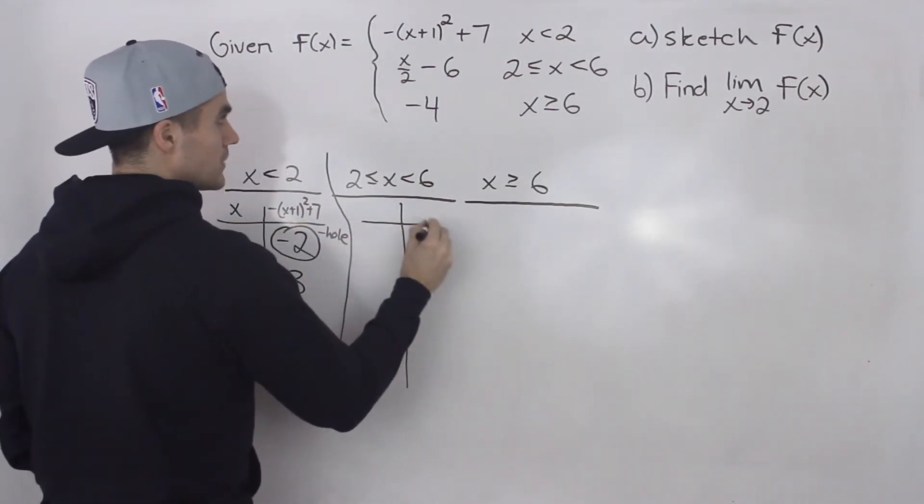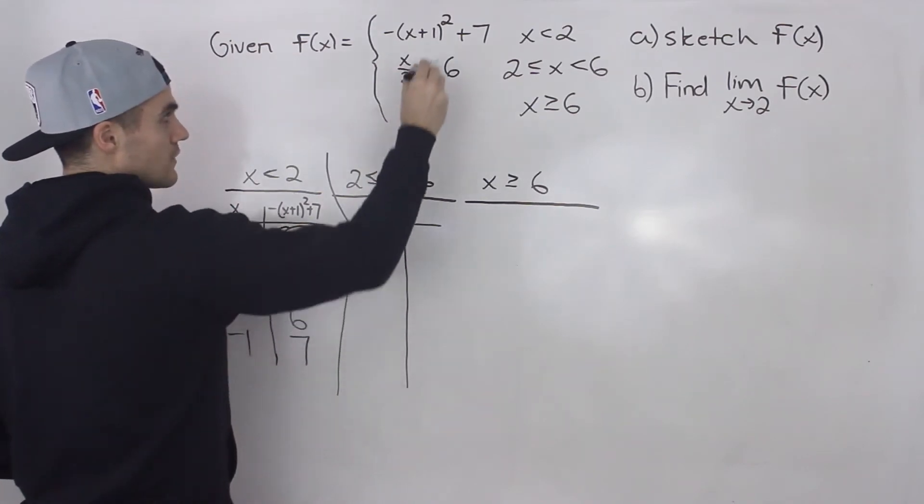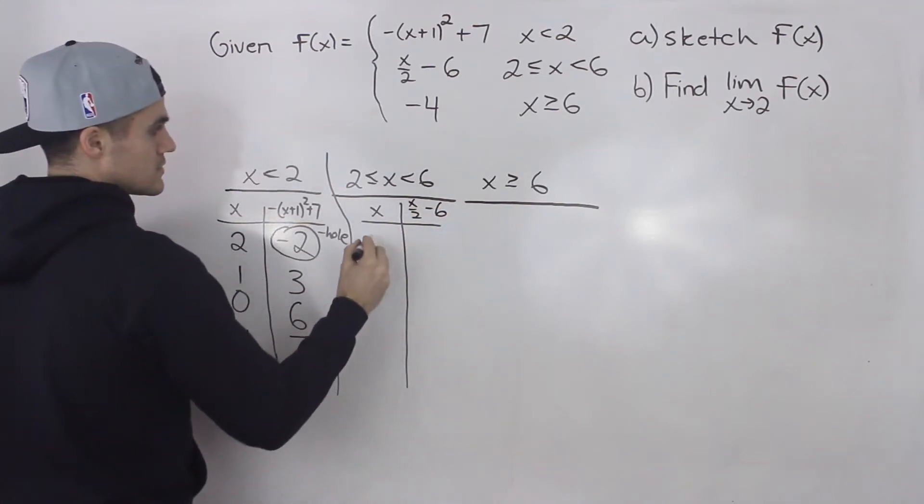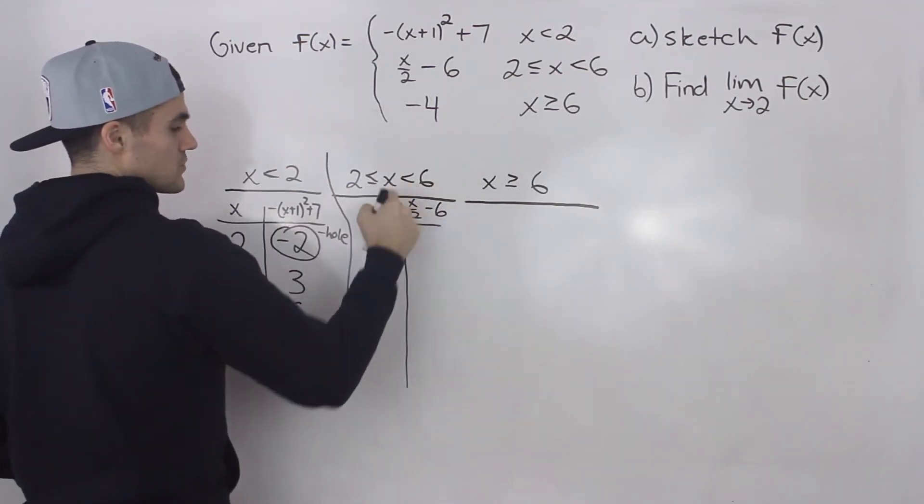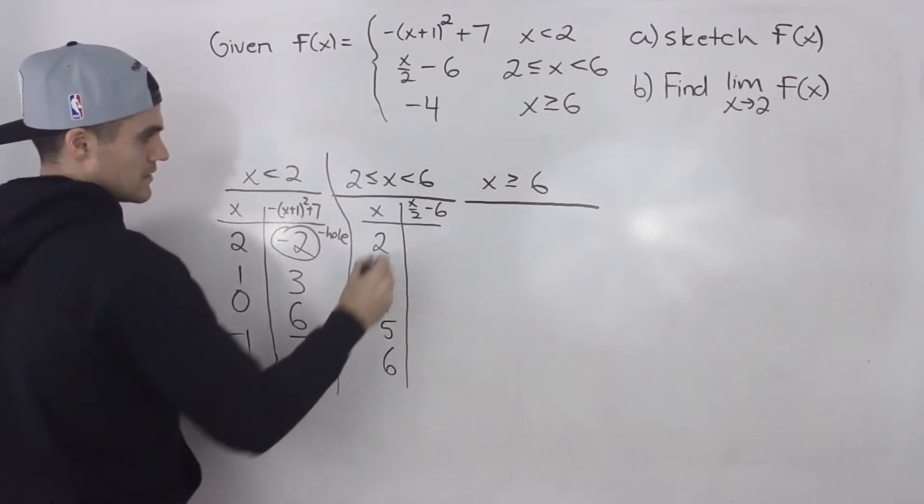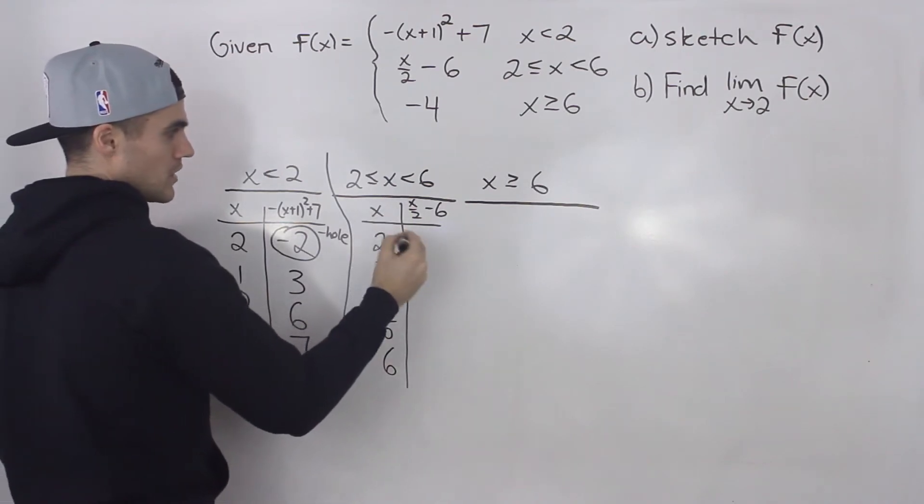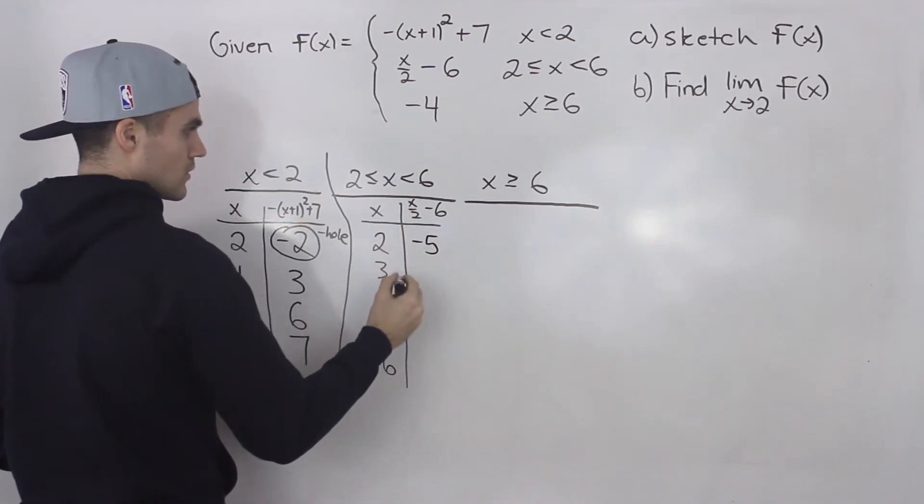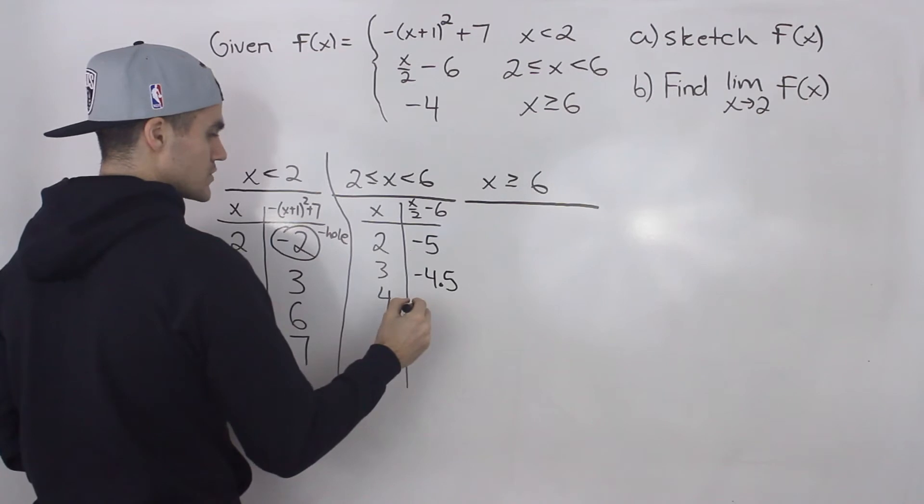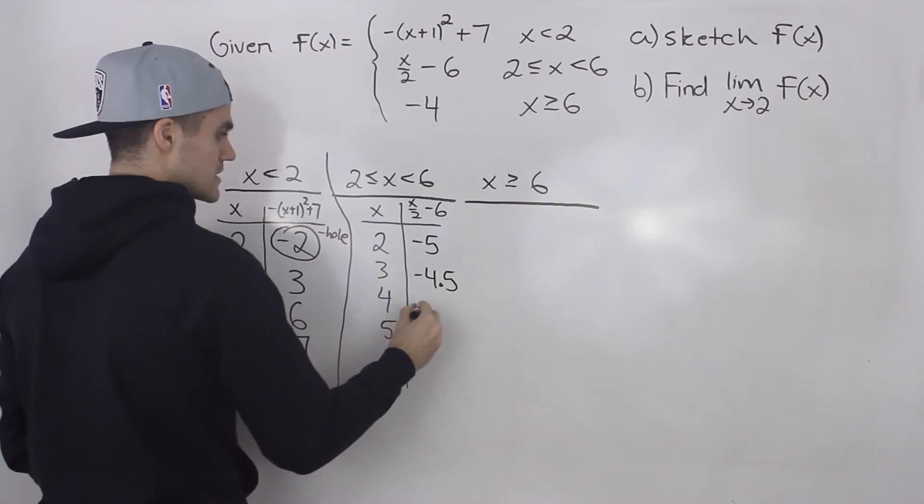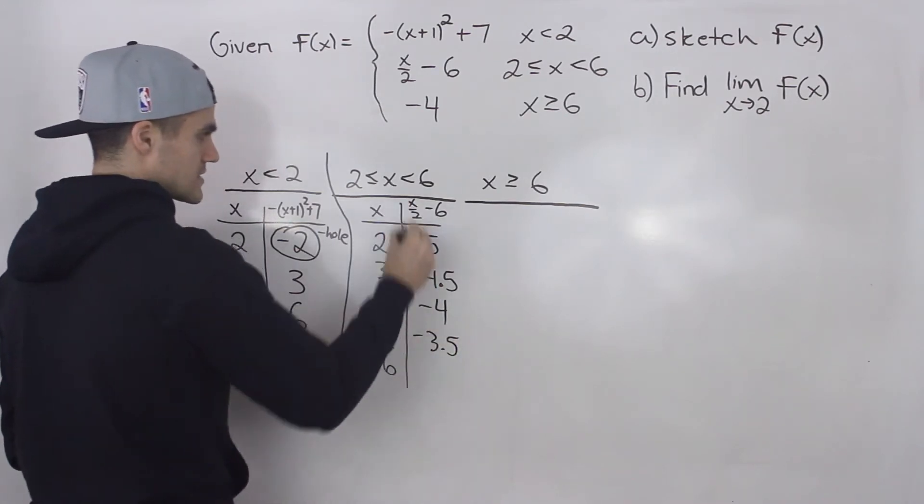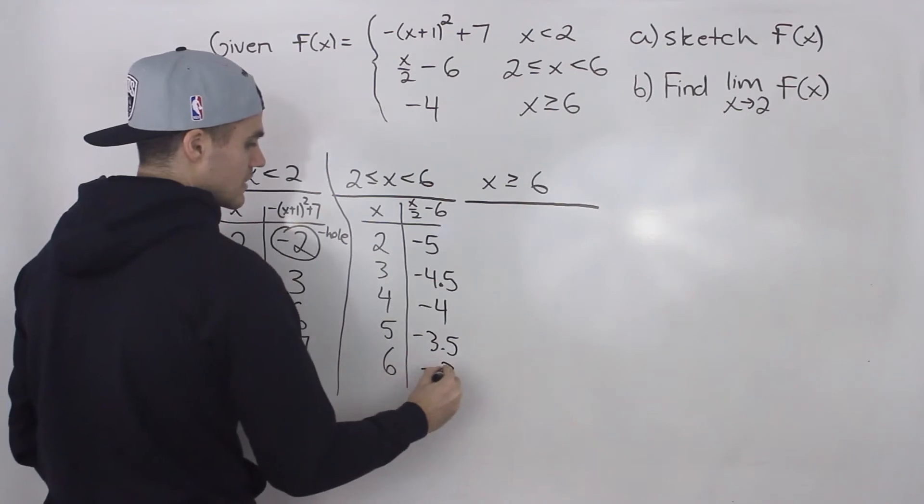Now for this middle piece, the x values, the function is defined by x over 2 minus 6. And this is for x values between 2 and 6. So 2, 3, 4, 5, 6. So x over 2, 2 over 2 is 1 minus 6 gives us negative 5. 3 over 2 is 1.5 minus 6 gives us negative 4.5. 4 over 2 is 2 minus 6 gives us negative 4. 5 over 2 is 2.5 minus 6 gives us negative 3.5. And then 6 over 2 is 3 minus 6 gives us negative 3.